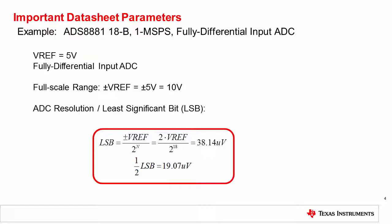This slide shows how to calculate the LSB resolution of the SAR ADC. In this example, the fully differential SAR ADC has a full scale range of plus or minus V ref. In this case, the reference voltage is 5 volts, and therefore the full scale range is plus or minus 5, or 10 volts. Since the ADC has an 18-bit resolution, the LSB can be calculated as 38.14 microvolts by dividing the full scale range by 2 to the 18th power.